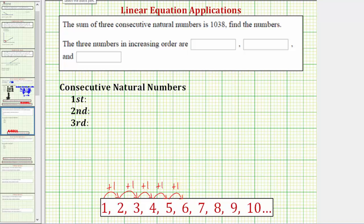Which means if we let x be equal to the first consecutive natural number, the second consecutive natural number would be x plus one, and the third consecutive natural number would be x plus one plus one, or x plus two.